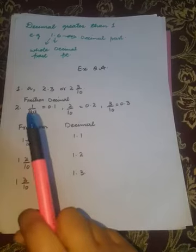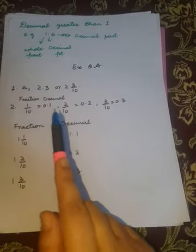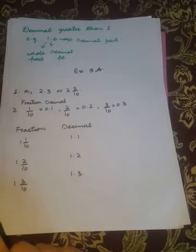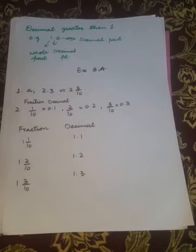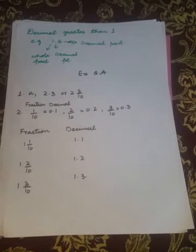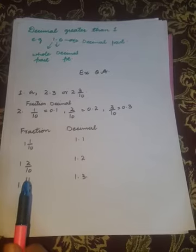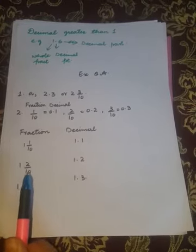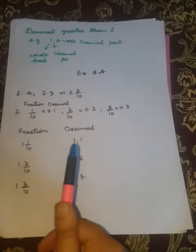Question Number 2 is complete the table. You have to write decimal: 1 by 10 is 0.1, 2 by 10 is 0.2, 3 by 10 is 0.3, 4 by 10 is 0.4. And the second one is the decimals that are greater than 1. You have to write decimal: 1 by 10 is 1.1, 2 by 10 is 1.2, 1 and 3 by 10 is 1.3.